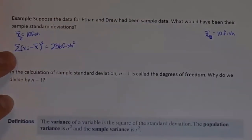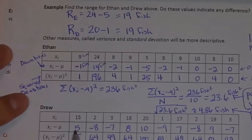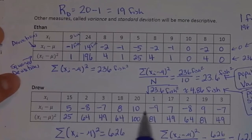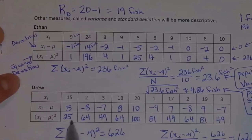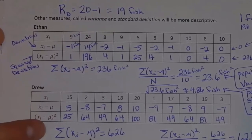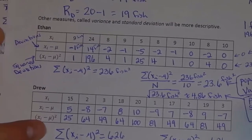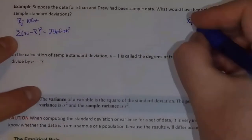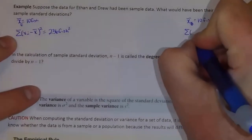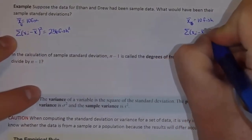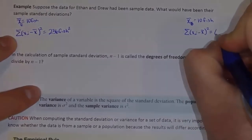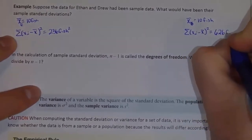And the same for Drew. All of these numbers for Drew would still be the same. So if I added up all of these numbers for Drew, I'm still going to get 626, even if it had been a sample. So for Drew, the sum of (x sub i minus x-bar) squared would still be 626 square fish.